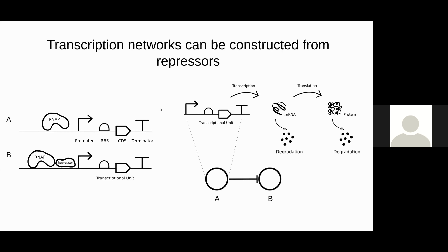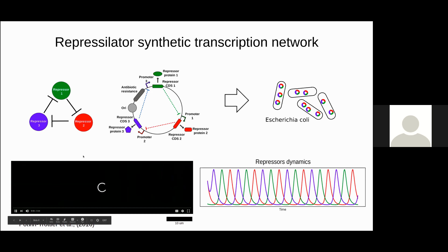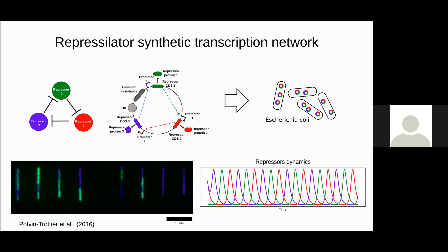These control mechanisms can form transcriptional networks made up of genes that interact with each other, where a gene can produce a protein acting as a repressor for other genes. Here we focus on the repressilator, a gene network encoding a ring oscillatory topology consisting of three repressors: repressor 1 inhibits repressor 2, repressor 2 inhibits repressor 3, and repressor 3 inhibits repressor 1. This generates oscillatory behavior at the single-cell scale, demonstrated with three fluorescent reporters assembled along with the three repressors in the same plasmid.